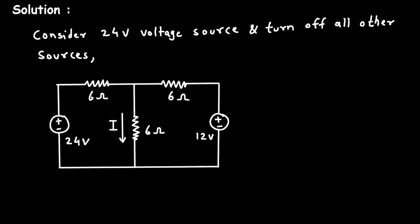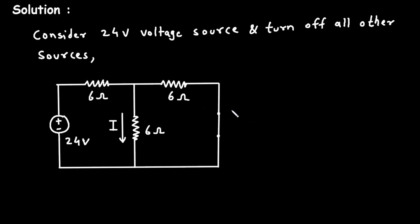So just replace this 12 volt by a short circuit. Remember that when we turn off a voltage source, we have to replace it by a short circuit. And when we turn off an independent current source, we have to open circuit it — replace it by an open circuit.